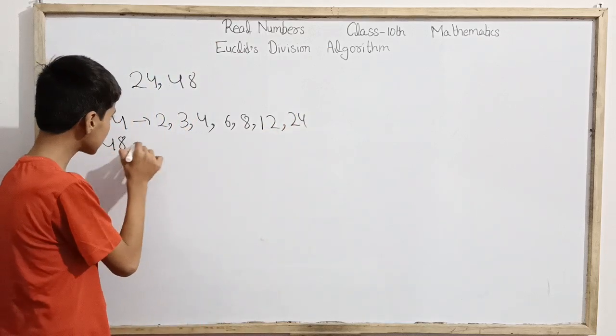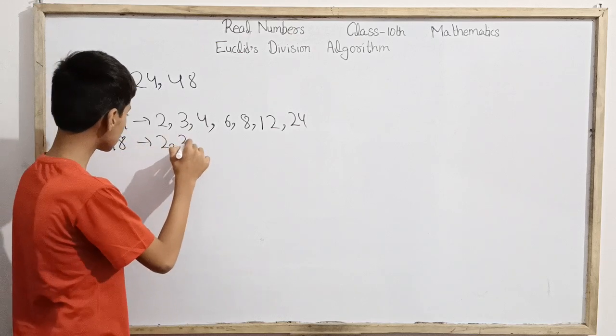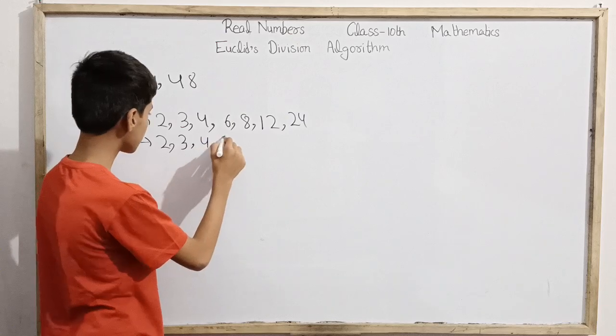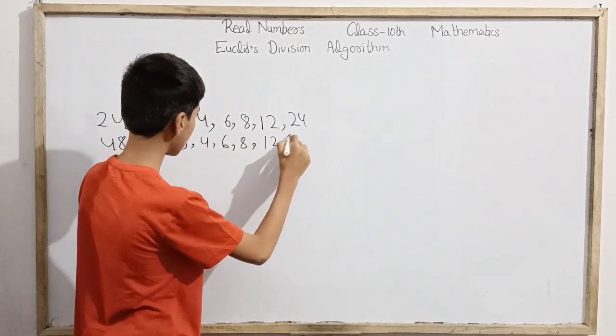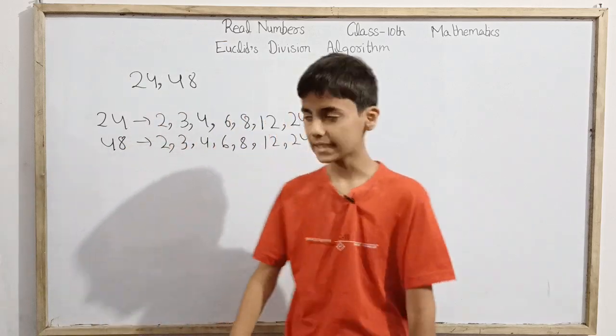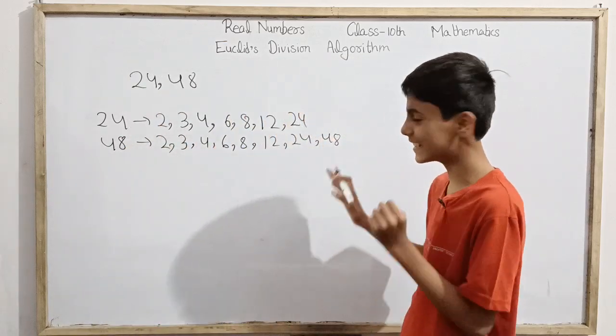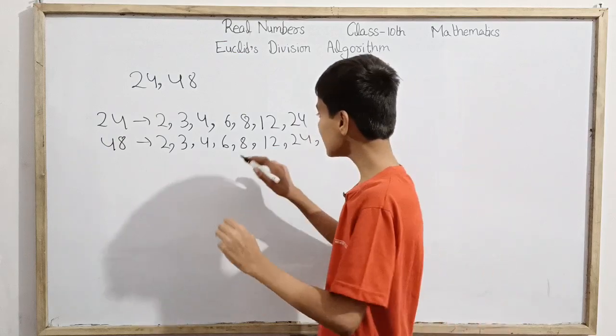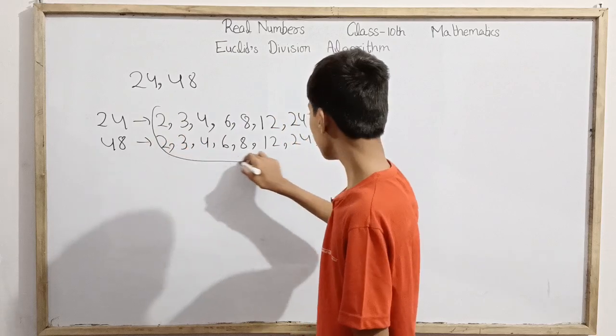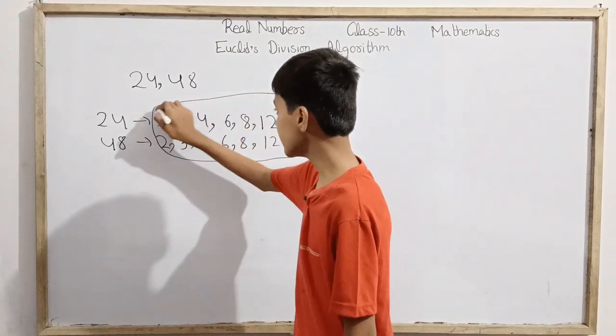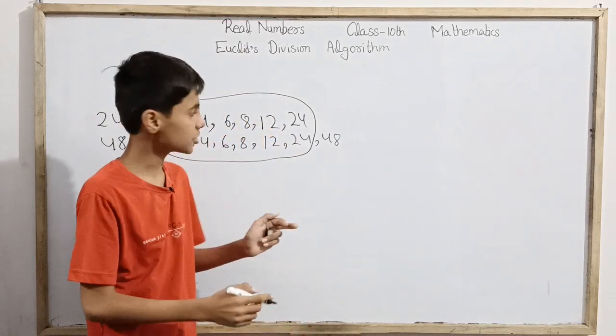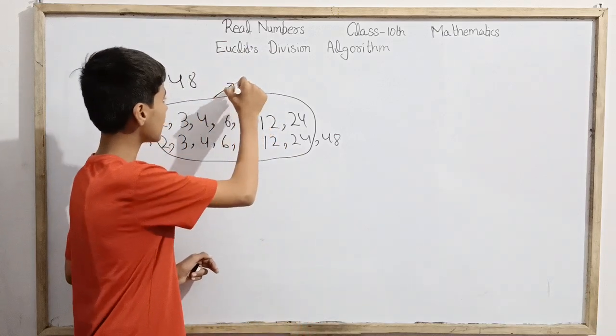If we look here, all of the numbers excluding 48 match. These divisors of 24 and 48 are common to each other. We call these common divisors of 24 and 48.